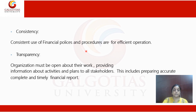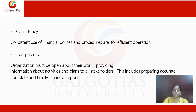The second principle is transparency. Transparency is very fundamental — the organization must be open about their work. There should be transparency in every aspect, like monitoring of things, the communication process, and providing information about activities and plans to all stakeholders. This includes preparing accurate, complete, and timely financial reports. When transparency is maintained, the environment will be stable and things will work accordingly.